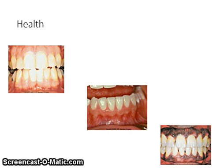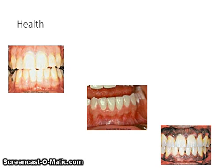The gingival color is pink or coral pink, with the exception of ethnic melanin pigmentation. The consistency of the gingiva is firm and the shape of the marginal gingiva is knife-like. The free gingiva is smooth and the attached gingiva has a stippled appearance. There is a clear demarcation between the pink-stippled attached gingiva and the darker alveolar mucosa. There is no bleeding on probing, no exudate is present, and probing depths range from 1 to 3 mm.